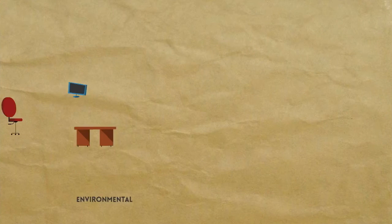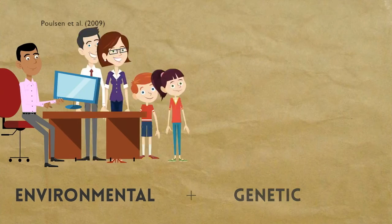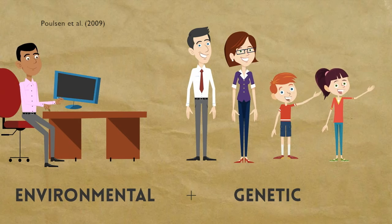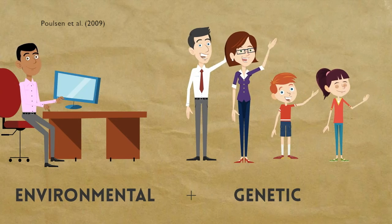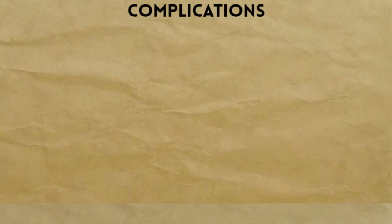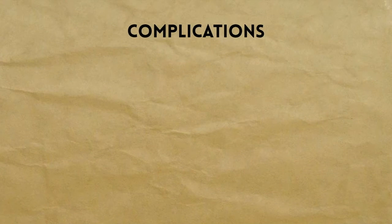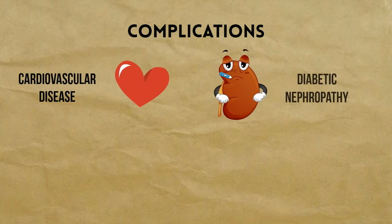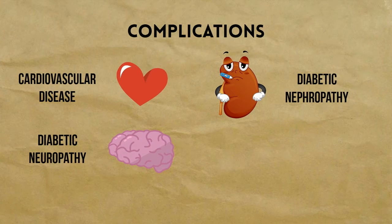It is thought that there is both an environmental and genetic component of type 2 diabetes. This was seen in a twin study performed by Pernille Poulsen in 2009, who saw that twins had a higher risk of type 2 diabetes than singleton children. Over time, individuals with type 2 diabetes have higher risk of complications such as cardiovascular disease, diabetic nephropathy, diabetic neuropathy, and various forms of cancer.